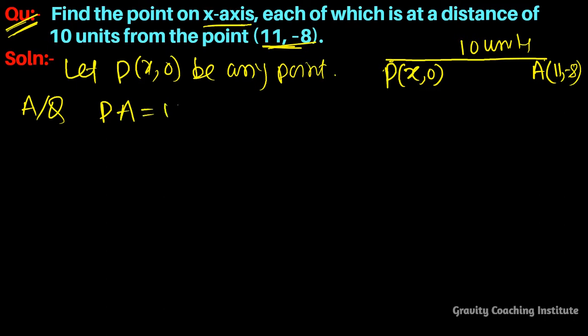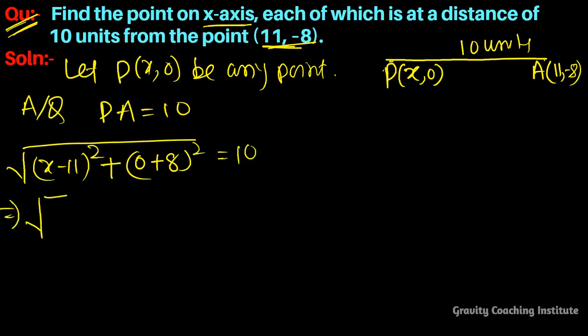So equal to 10. Now we'll apply the distance formula: √[(x-11)² + (0-(-8))²] = 10, which becomes √[(x-11)² + (8)²] = 10. So this implies root under, and using the (a-b)² identity: x² - 2(x)(11) + 11²